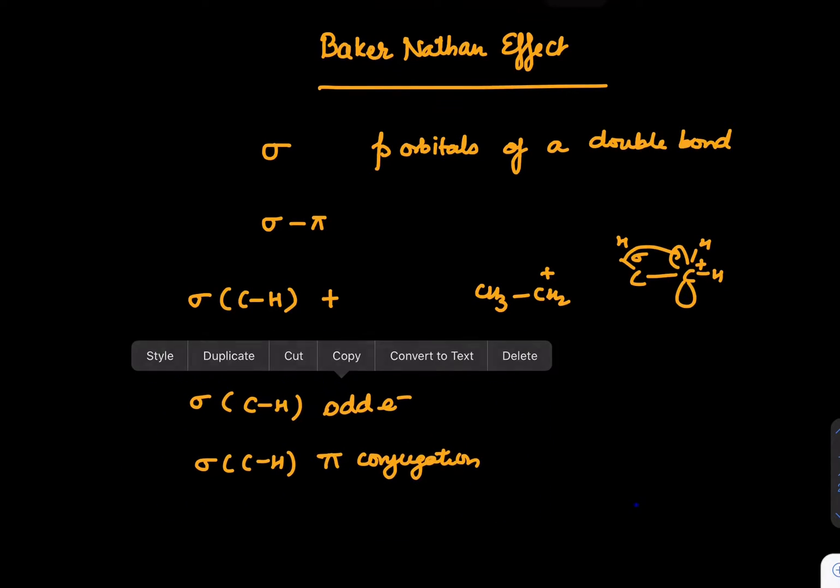Next one is sigma C-H odd electron. Take examples like CH3-CH2 and put a radical. In this case also we can draw structures, and we can talk about the sigma bond and radical position. This is called sigma C-H odd electron support.